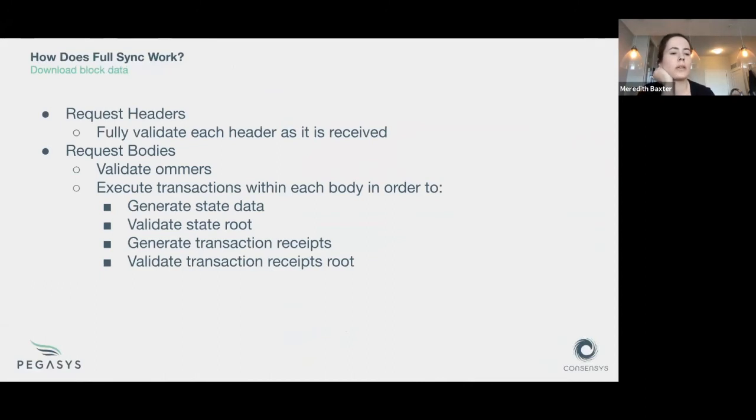As far as what those requests look like, we're going to pull headers. As those headers come in, we'll fully validate each of them. We're going to request bodies. Those bodies have uncles and they have transactions, so we'll validate the uncles, we'll execute the transactions. And as we execute transactions, we're generating state data, and after executing the full set of transactions in a body, we're going to get a state root, so we can validate that state root against the corresponding header. We're also producing transaction receipts, so we can match the transaction receipt root to the corresponding header as well.